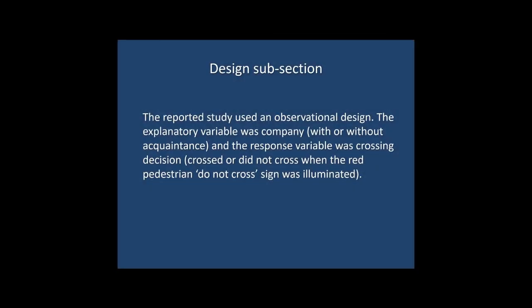Here's the design subsection of our example lab report. As you can see, it's very straightforward. The author begins by indicating the kind of design the study used — in this case, an observational design. They then delineate the different variables. The explanatory variable was company, i.e. whether the person crossing the road did so with or without an acquaintance. And the response variable was their crossing decision, i.e. whether they crossed or did not cross the road when the red pedestrian 'do not cross' sign was illuminated.